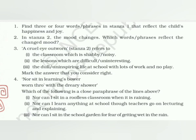Question three: 'a cruel eye outworn' in stanza two refers to what? Option one: the classroom which is shabby and noisy. Option two: the lessons which are difficult and uninteresting. Option three: the dull, uninspiring life at school with lots of work and no play. The answer is number three — it's very obvious. Question four: 'Nor sit in learning's bower, worn through with the dreary shower' — which of the following is a close paraphrase? The correct answer is number two: nor can I learn anything at school though teachers go on lecturing and explaining. There is no talk of rain in the poem, so options one and three are wrong.